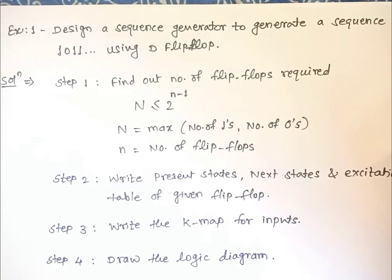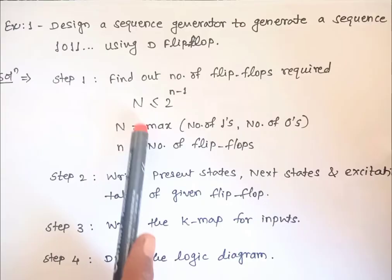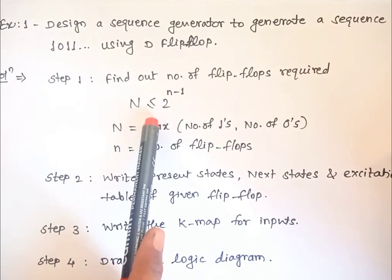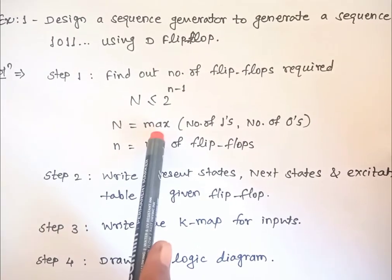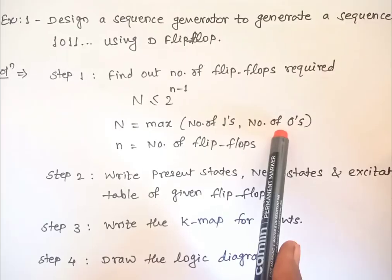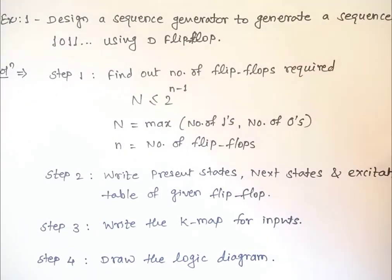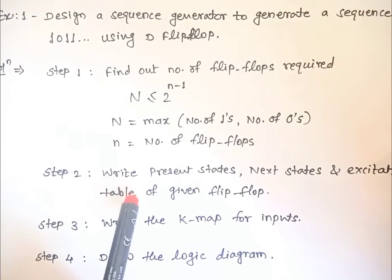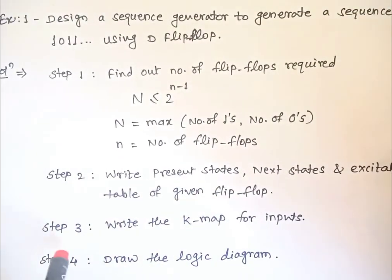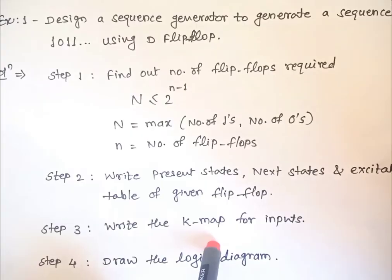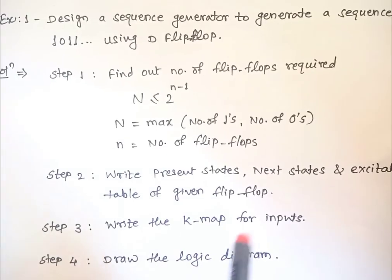Let us see the steps required. Step one: find out the number of flip-flops required. You can use the formula: capital N should be less than or equal to 2 raised to small n minus 1, where capital N is the maximum of the number of ones and number of zeros from the given sequence, and small n is the number of flip-flops required. Step two: write present states, next states, and excitation table of the given flip-flop. Step three: write the K-map for the inputs of the flip-flops. Step four: draw the logic diagram from the Boolean expressions obtained in step three.